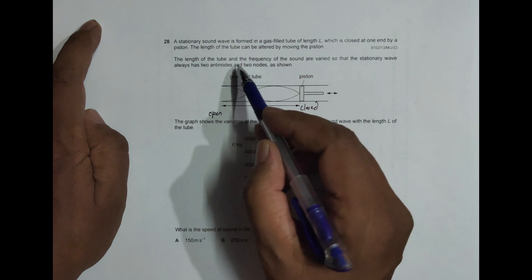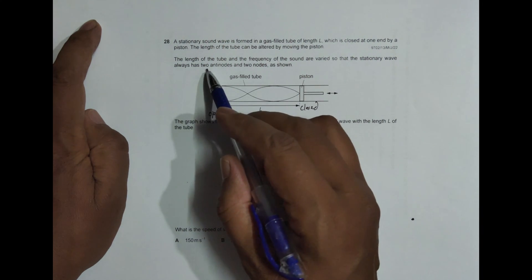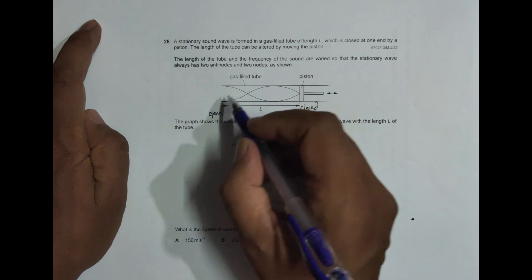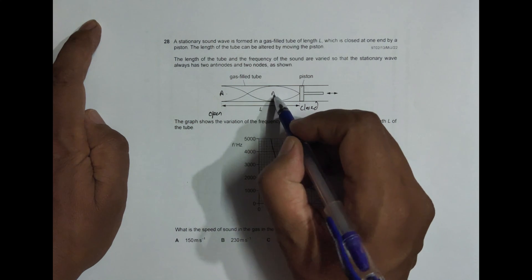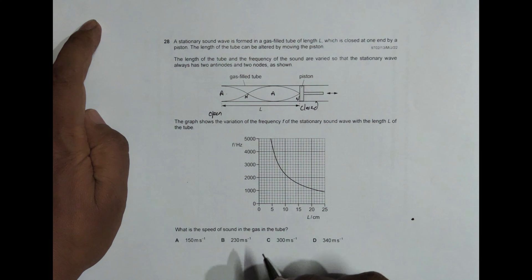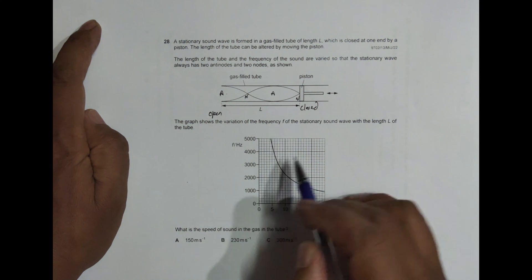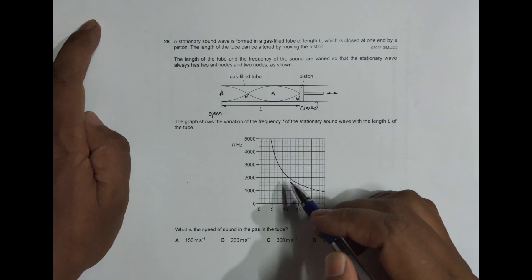The length of the tube and the frequency of the sound are varied so that the stationary wave always has two antinodes and two nodes. So this is A and A here and this is N and N here. The graph shows the variation of the frequency F of the stationary wave so formed with the length L of the tube.